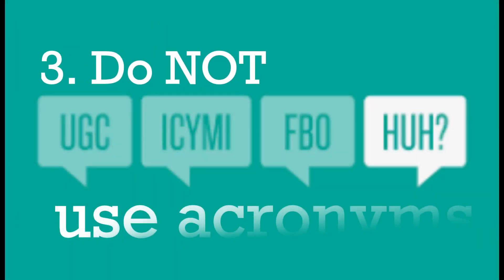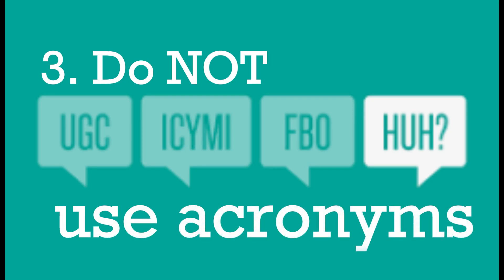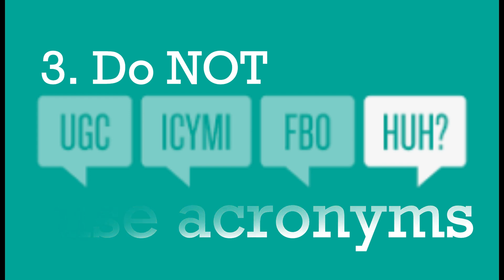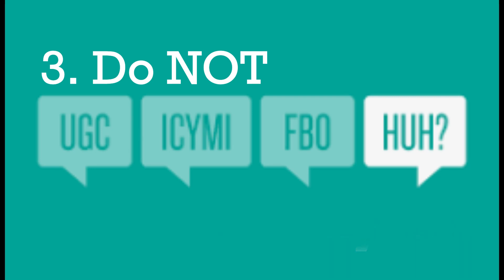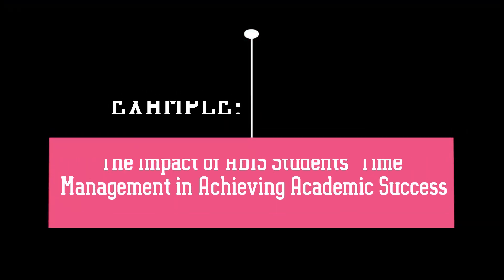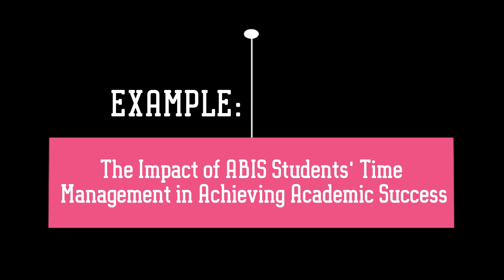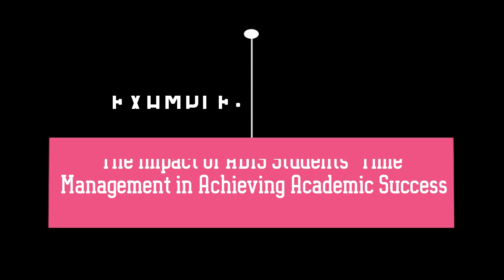The next thing to avoid is acronyms. As much as possible, spell out words that may confuse your target audience if used in letter form in your title. However, for school names mentioned in titles, it is okay to use their acronym, as it would be understandable in context. For example: 'The impact of ABISS students' time management in achieving academic success.' Here ABISS is clearly the school name. Acronyms work well to reduce word count, but an acronym well known in one field may not be common in another, so be careful.